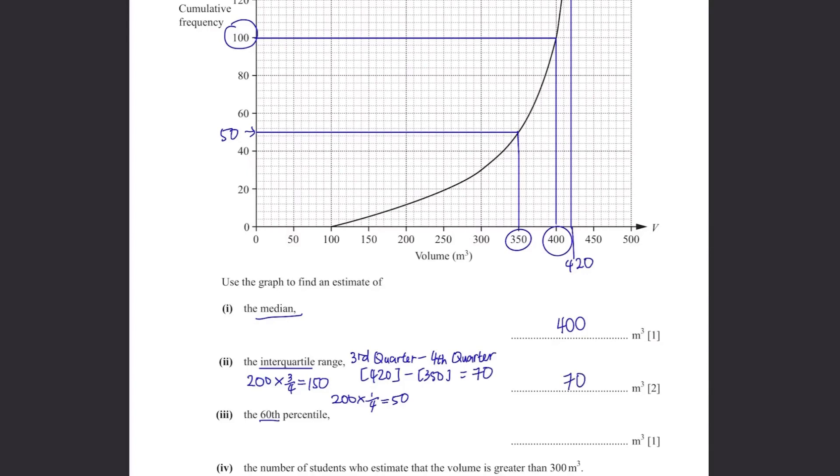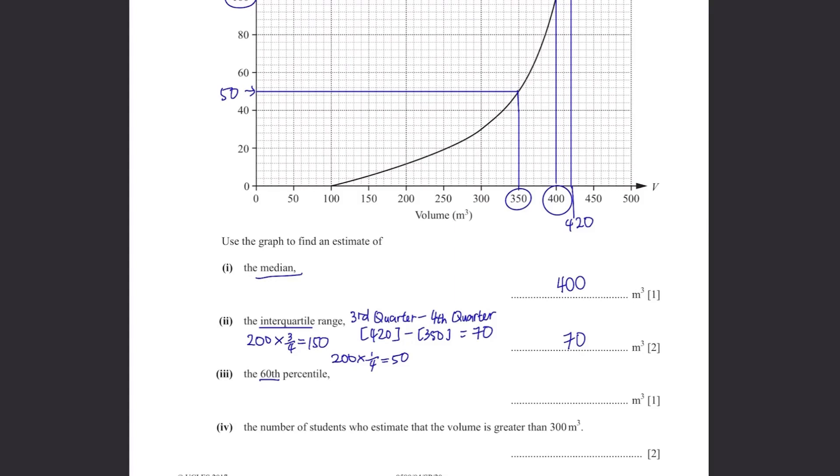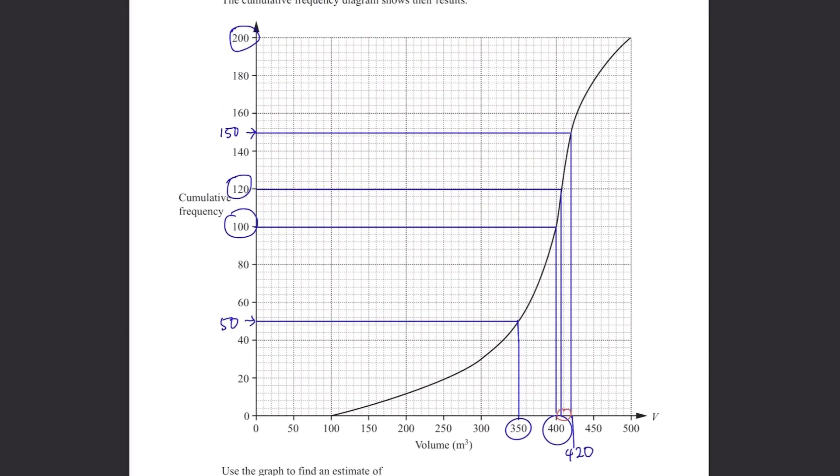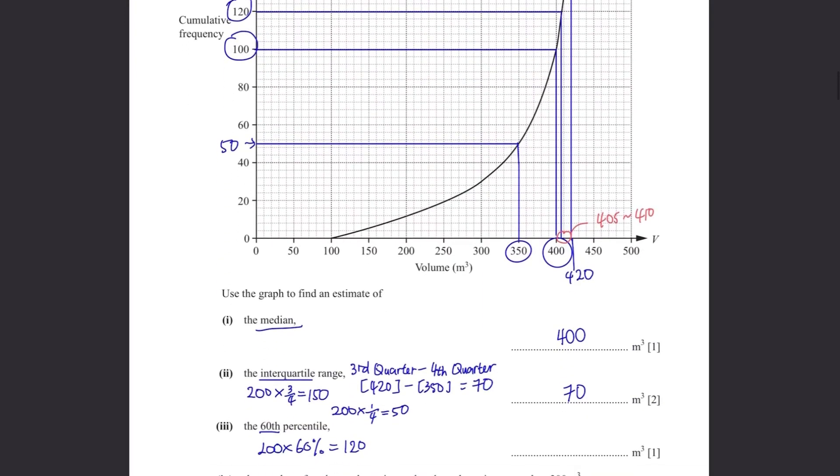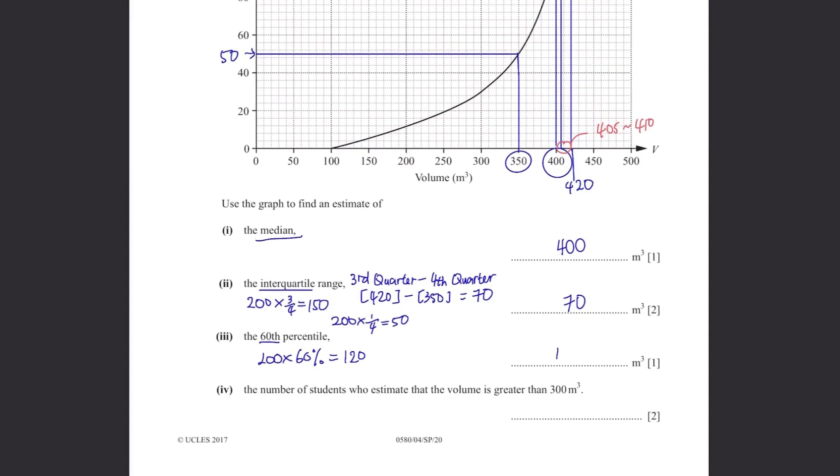The 60th percentile. Similar question here. If it's 60th percentile, we again multiply 200, the total cumulative frequency with 60%. It's 120. See where it lands on the graph. Somewhere between 405 and 410, you can put any number between this range. I'll put it as 407.